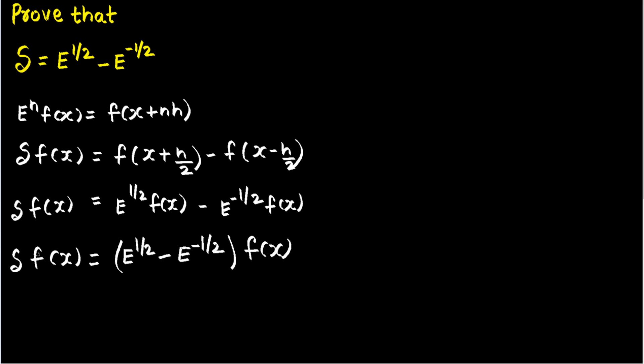Now both sides have the same function, so I can directly equate the operators. So delta equals e^(1/2) minus e^(-1/2). This is the relation between central difference operator and the shift operator.